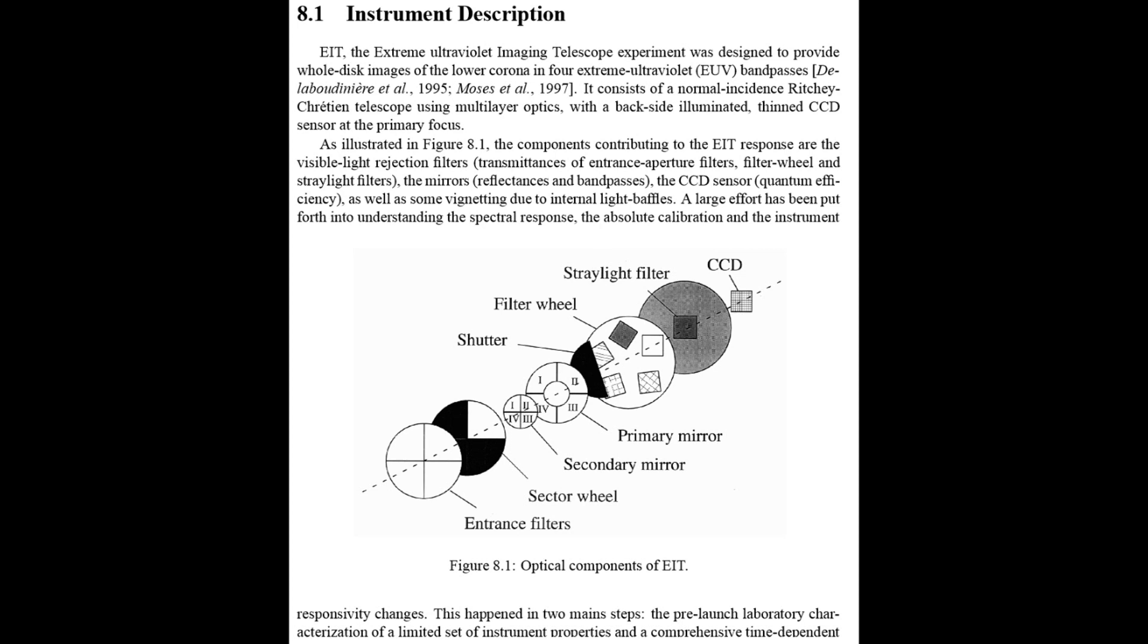Micrometeorite strike damaged the front entrance filter. That allowed more visible light in past the tear in the stray light filter at the back of the instrument and onto the CCD. That tear in the stray light filter was created at launch. That's in a fixed position. It didn't change simply because the meteorite hit the spacecraft. The meteorite damaged the entrance filter. That simply allowed more visible light onto that stray light filter.